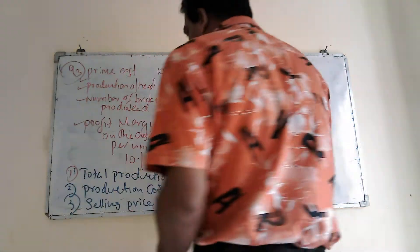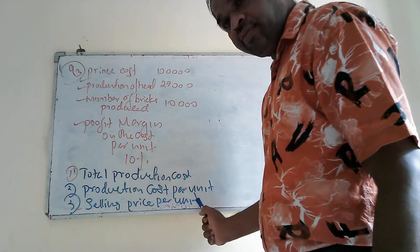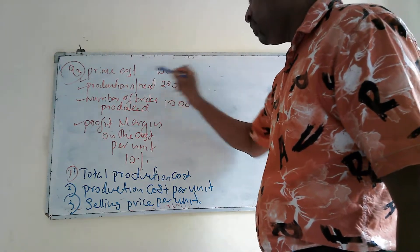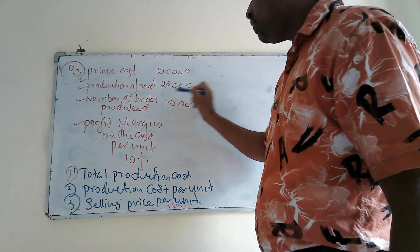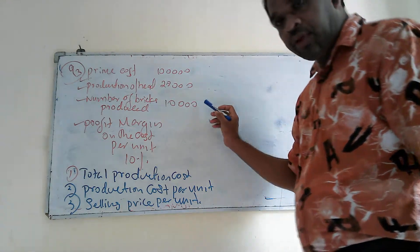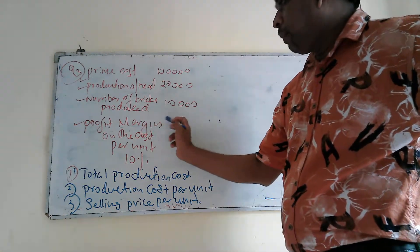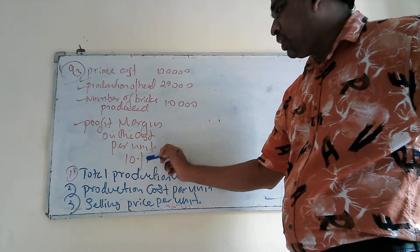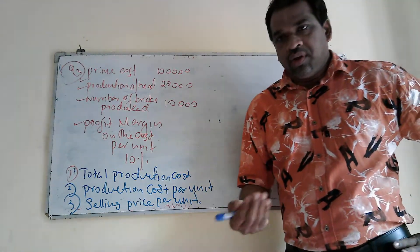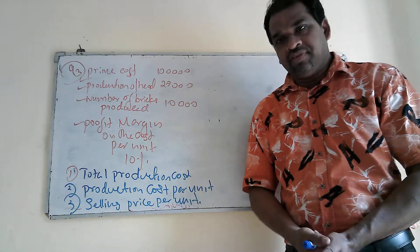You are asked to calculate the total production cost, production cost per unit, and selling price per unit. The given data: prime cost is 100,000; production overhead is 20,000; number of units produced is 10,000; and profit margin on cost per unit is 10%. We are going to understand how to decide unit cost, profit margin, and finally the selling price.